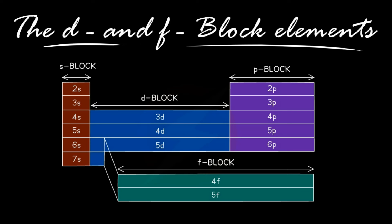Hello everyone, so we are discussing the examples of the chapter the D and F block elements and today we will discuss example number 2. So here the question is, why do the transition elements exhibit higher enthalpies of atomization?